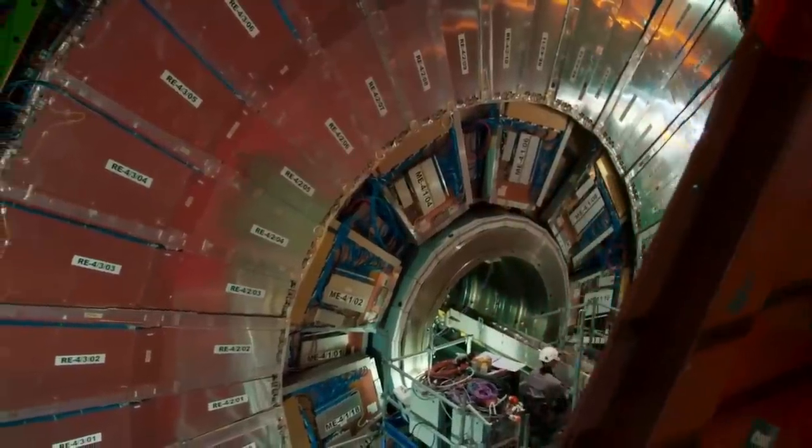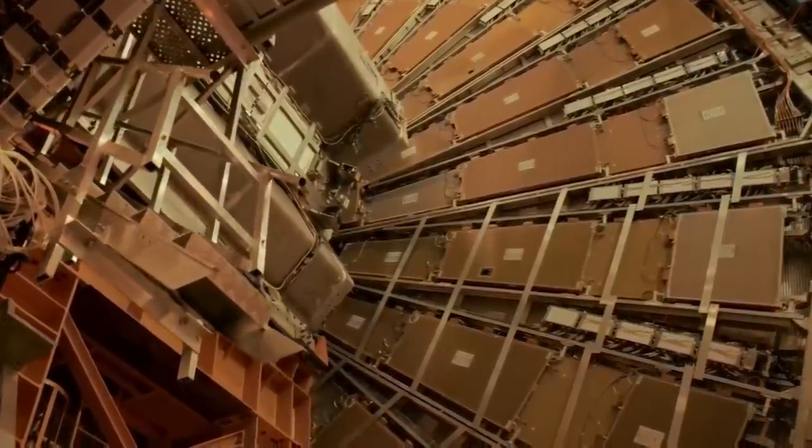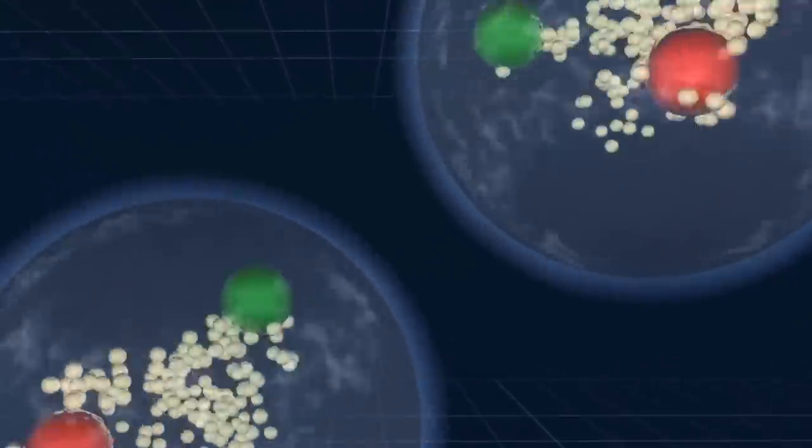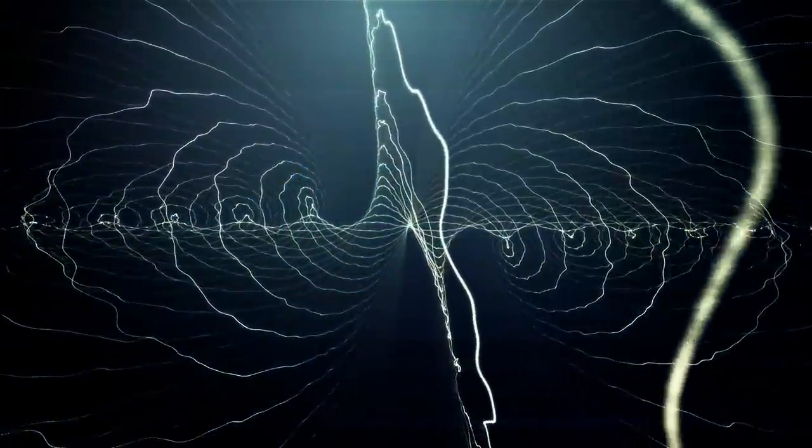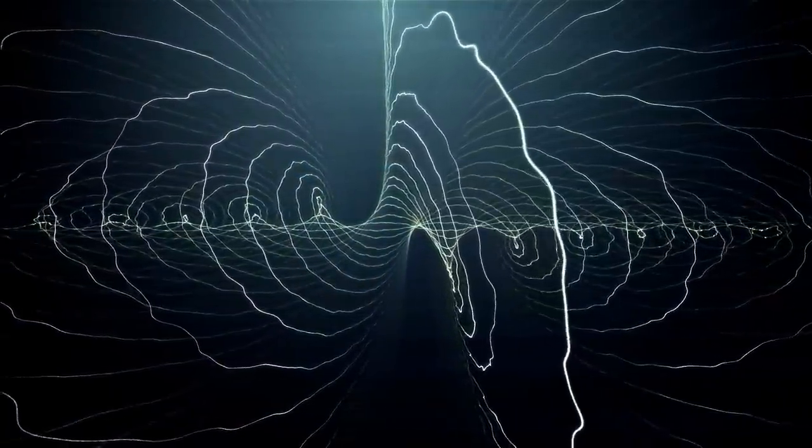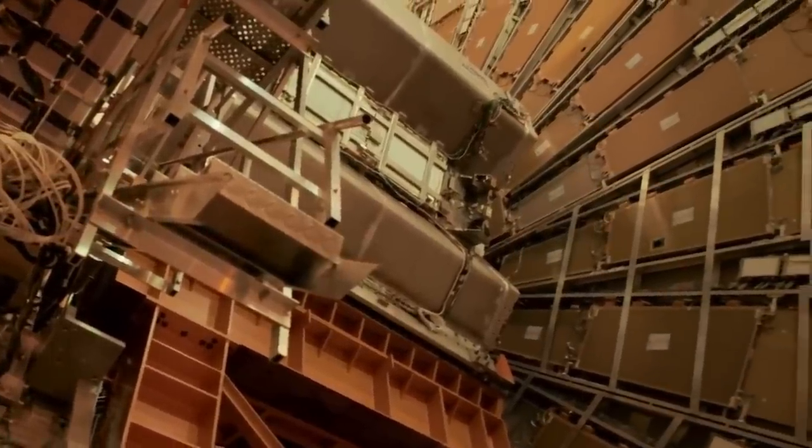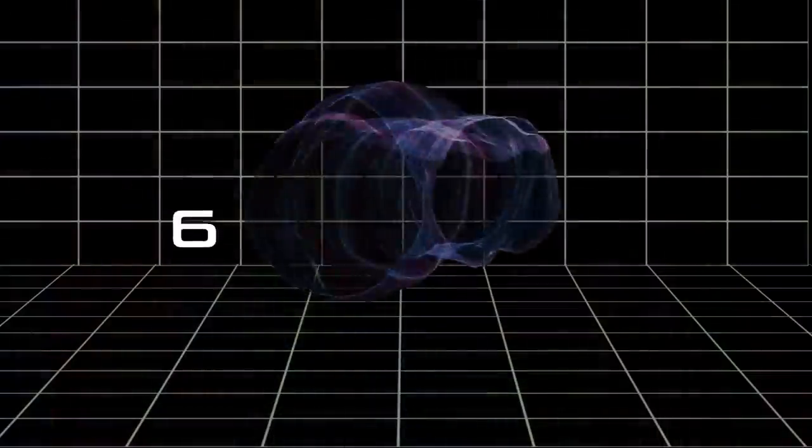There's the possibility that when tiny particles smash into each other like they do in CERN's Large Hadron Collider, they could actually create little tiny black holes, not a huge earth-eating one. Physicists theorize that this would be possible if there were more than three dimensions. Complex mathematical models based on string theory say that at certain super high energies, these little black holes could form in six or even ten dimensional space.